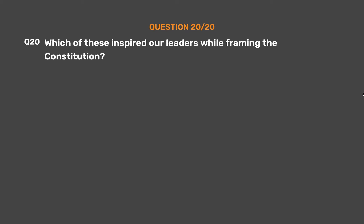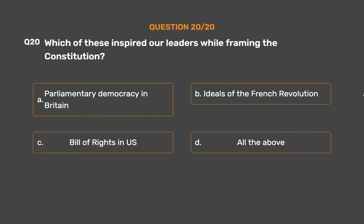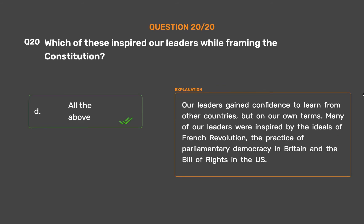Question 20: Which of these inspired our leaders while framing the constitution? Option A: Parliamentary democracy in Britain. Option B: Ideals of the French Revolution. Option C: Bill of Rights in US. Option D: All the above. The correct answer is Option D: All the above. Our leaders gained confidence to learn from other countries but on our own terms. Many of our leaders were inspired by the ideals of the French Revolution, the practice of parliamentary democracy in Britain, and the Bill of Rights in the US.